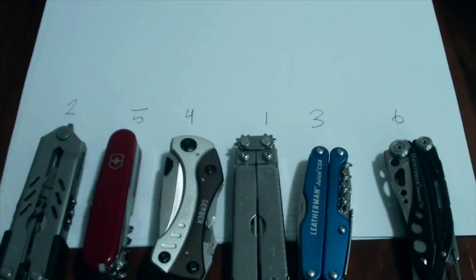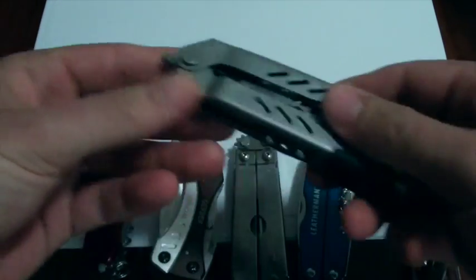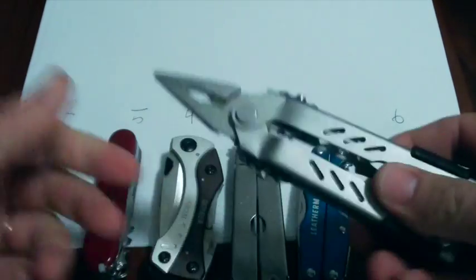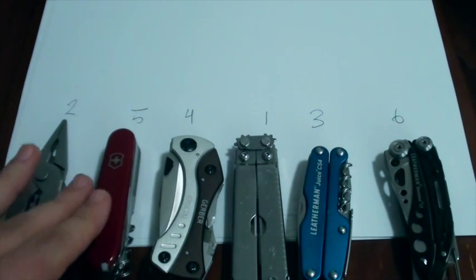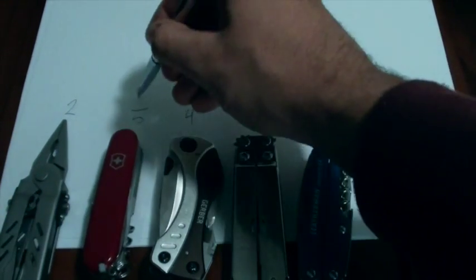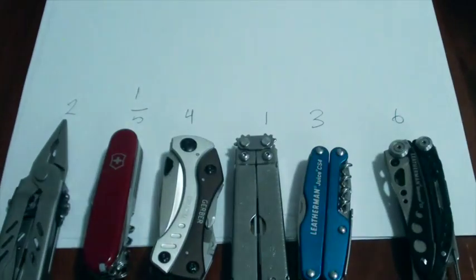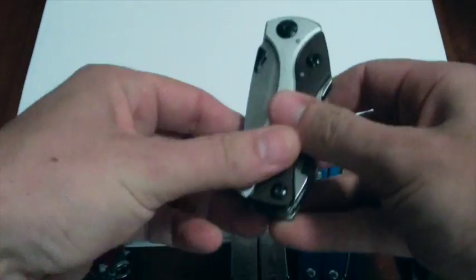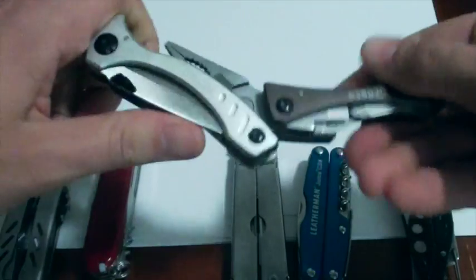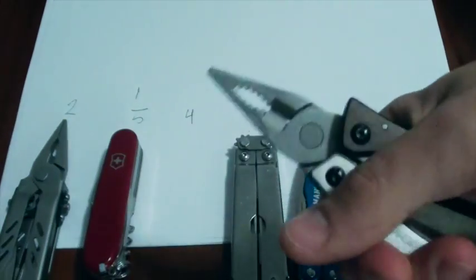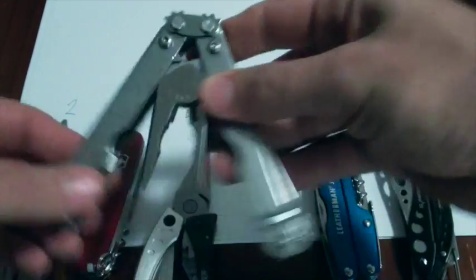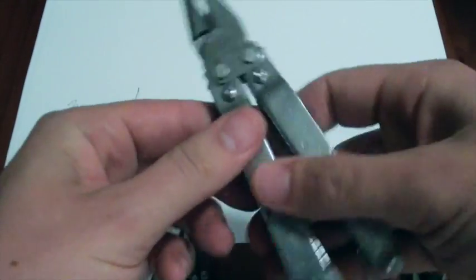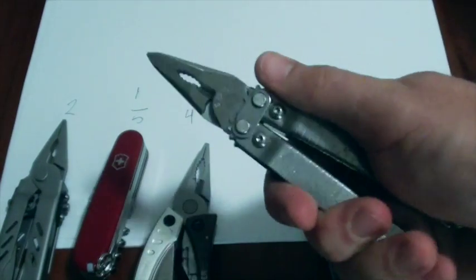Pliers, the best pliers. MP400 has the 1-hand opening flick-out pliers. Pretty standard. This has no pliers, so it automatically gets the 1 point. Spoilers, sorry. The Crucial has a fairly ergonomic set of rather thin pliers.